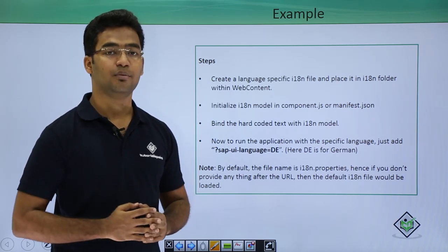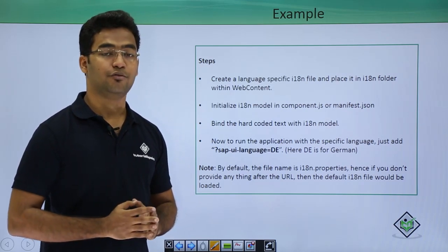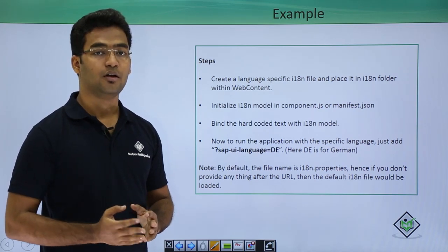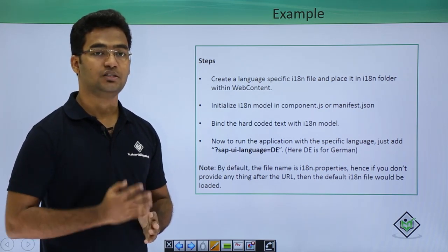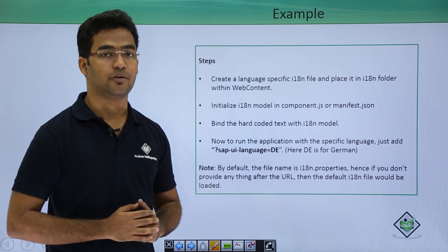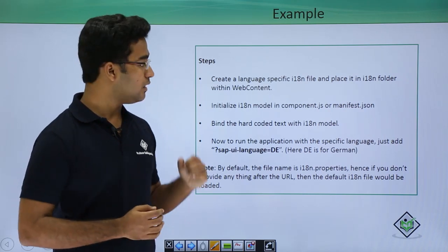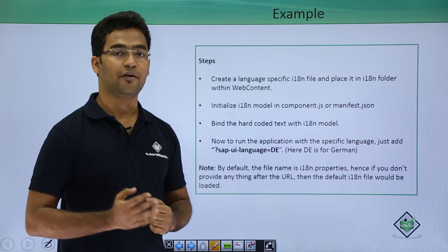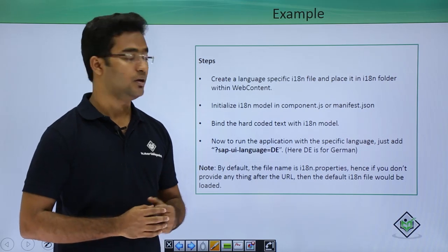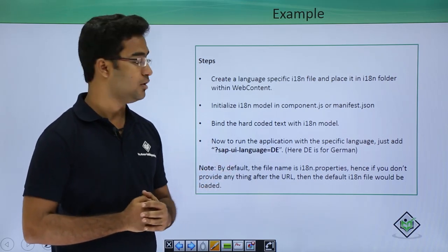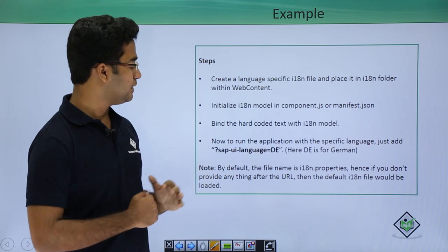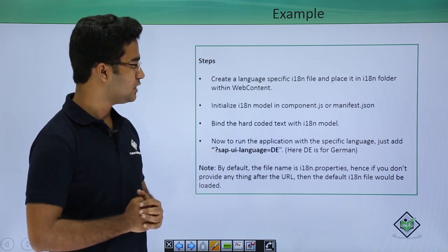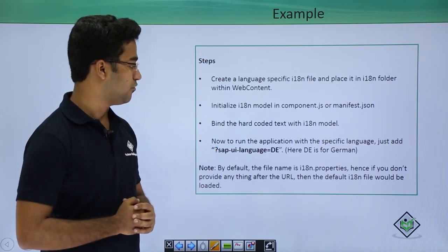You might remember from previous videos where we used the JSON model and the OData model — for both we initialized the model in the manifest.json file. Here the i18n model is also a resource model, so we initialize it in manifest.json as well. Once we have done the initialization, we bind the hardcoded text with the i18n model itself.